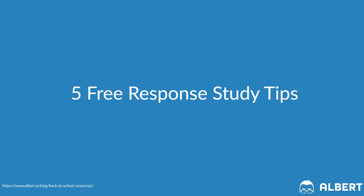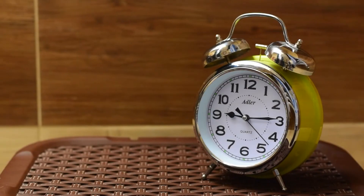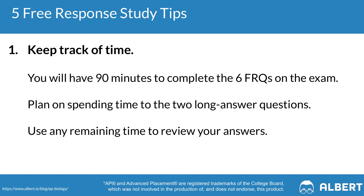Now let's jump into some FRQ tips for AP Biology. Our first tip when it comes to tackling your free response section is to keep track of time. You're going to have 90 minutes to answer six free response questions. Two of these are going to be way longer than the other four. We recommend blocking at least 20 minutes to answer each of the longer FRQs since each is worth 10 points, and then about 10 minutes for each of the remaining four questions, which are typically worth four points. This leaves roughly 10 minutes at the end for any question that gave you difficulty.